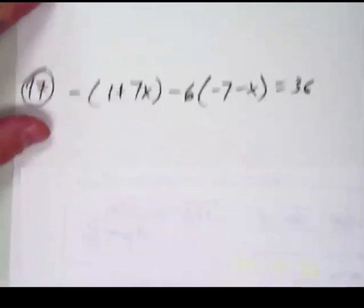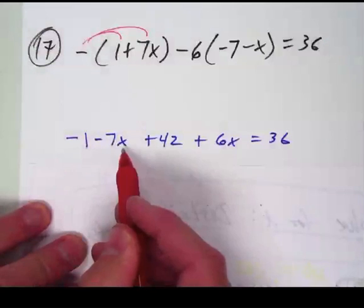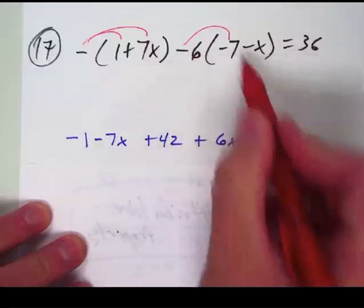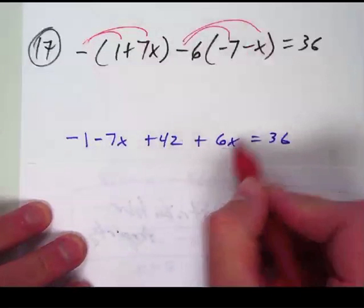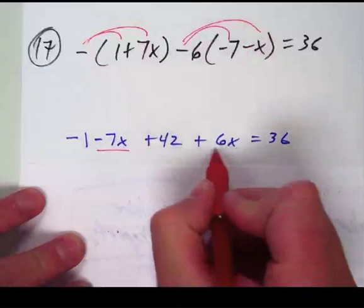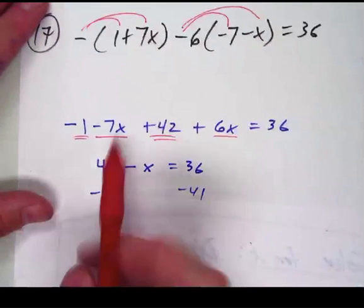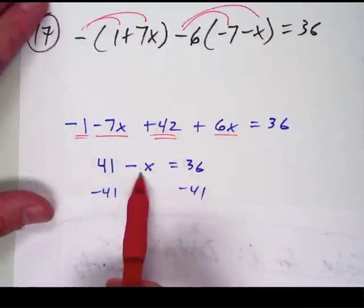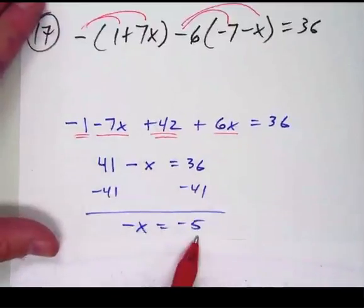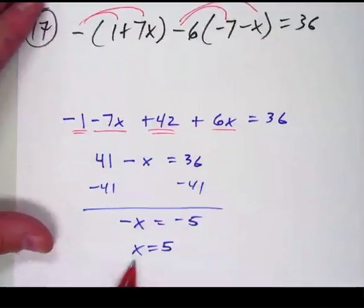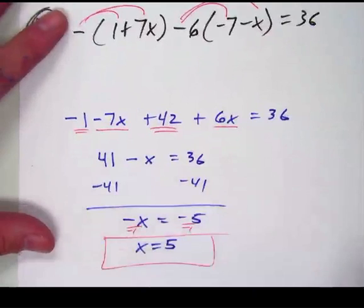Welcome back. Here's what I have. I distributed the negative 1 to each piece, making this negative 1 and minus 7x. Distribute a minus 6 — a negative times a negative is a positive 42 — and then a minus times a minus is a positive 6x equals 36. Now combining like terms: those two are like terms, the numbers get combined. I get 41 for the numbers and negative x for the letters. Subtract 41 on both sides and I get negative x equals negative 5 — well if negative x equals negative 5, then positive x equals positive 5. Basically you're dividing by negative 1, and you get x equals 5.